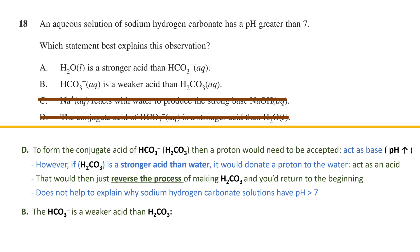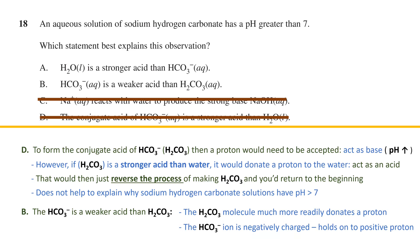In option B, it states the hydrogen carbonate ion is a weaker acid than H₂CO₃ or carbonic acid. This is true — the H₂CO₃ molecule more readily donates a proton to water than the negatively charged hydrogen carbonate ion, which holds onto the positive proton more tightly. However, this true statement does not explain why the sodium hydrogen carbonate solution is basic, so option B is also eliminated. This just leaves option A as our answer. That concludes this video — please tune in for the next set of questions from this exam. Thanks for watching.